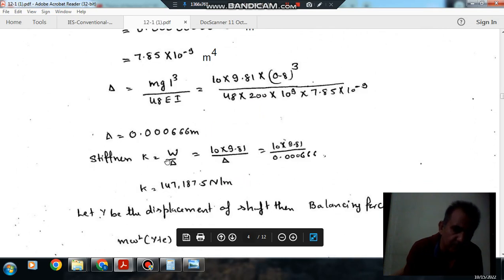From this deflection and from the weight of the rotor W = mg, we can find the stiffness. Stiffness K = W/δ = 147,187.5 N/m.